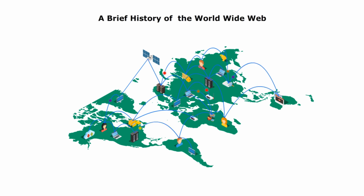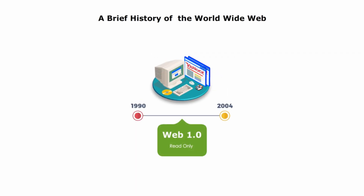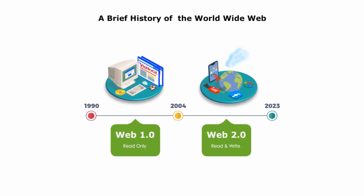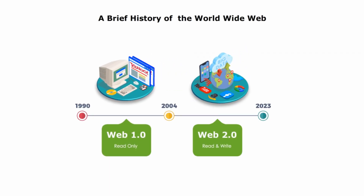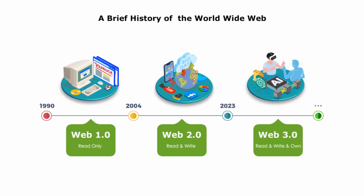The Web is a system of interconnected pages and resources that can be accessed through the Internet. The Web has undergone different development stages, often called Web 1.0, Web 2.0, and Web 3.0. Each stage represents a significant change in how users interact with the Web and the technologies used.